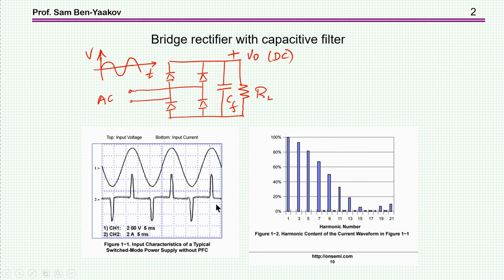This picky current has a very heavy harmonic content, which is now forbidden by a number of standards in most countries. And therefore, there is a need to shape the input current such that the harmonic content will abide with the norm.